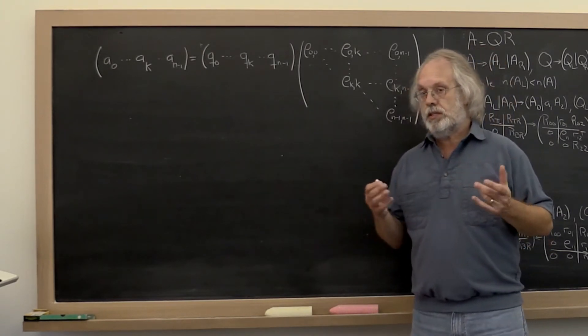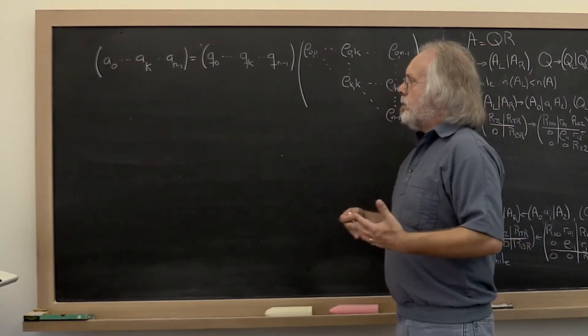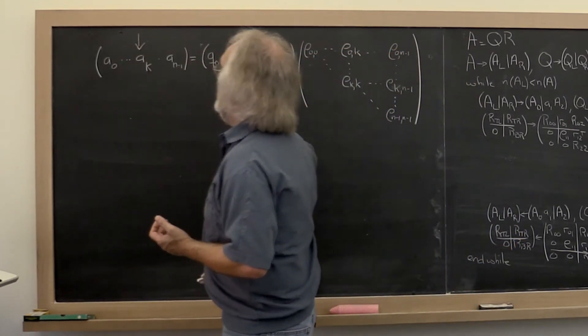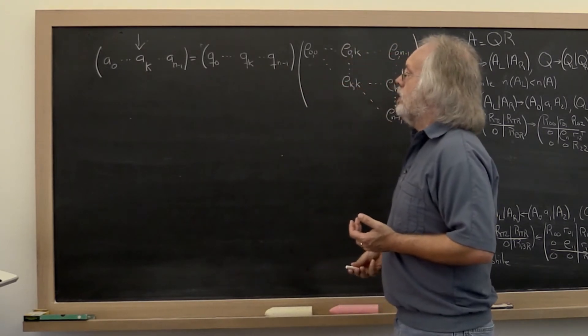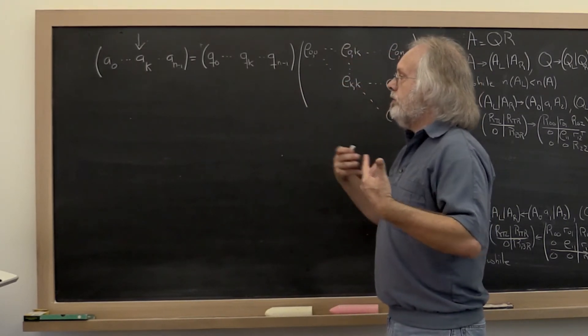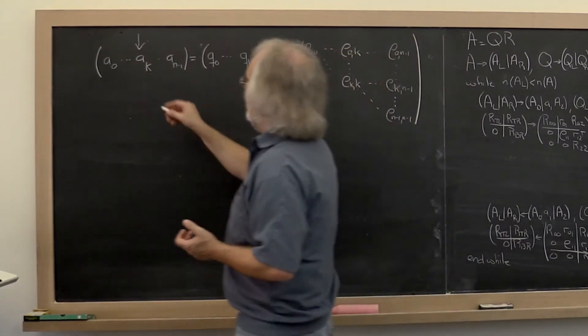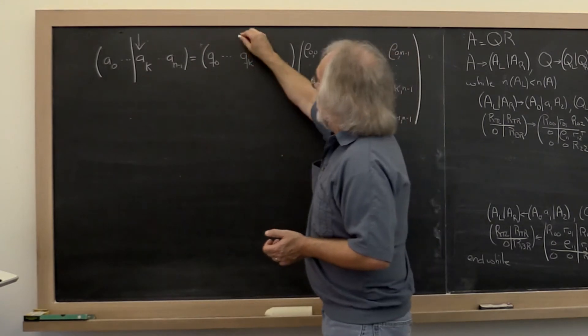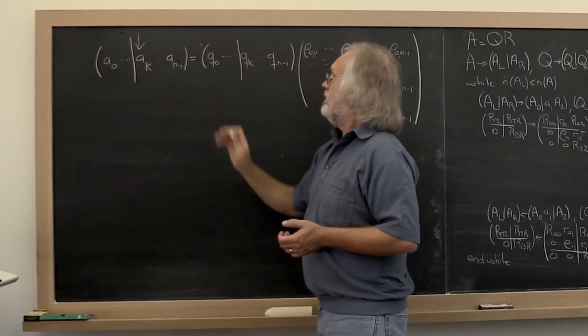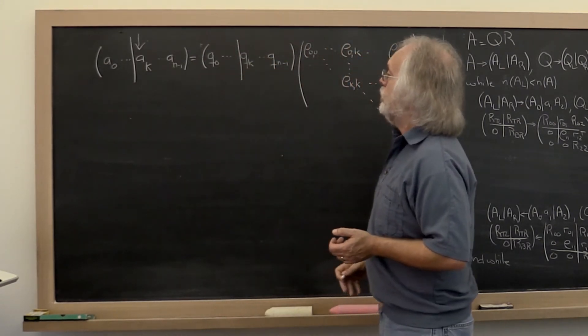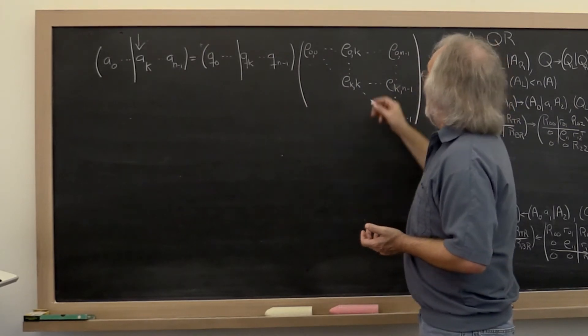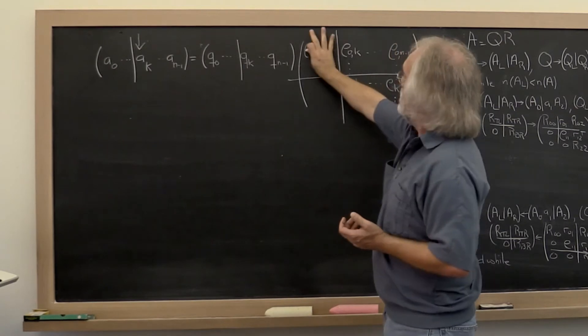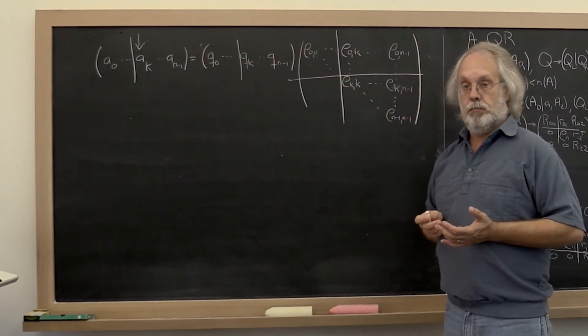So let's see how we can do that. Remember that what we really did was we focused on the column indexed by k under the assumption that previous columns had been processed. All columns to the left of this bar had been processed. All columns to the left of this bar, all the columns of Q, had already been computed. And all of the elements of R in this top left corner also had already been computed.